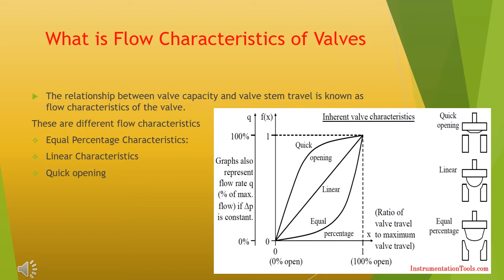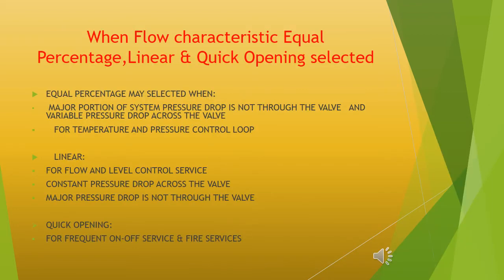Quick opening has too high a valve gain for use in modulating control, so it is limited to on-off service. When selecting flow characteristics — equal percentage, linear, or quick opening: equal percentage may be selected when a major portion of system pressure drop is not through the valve and there is variable pressure drop across the valve, for temperature and pressure control loops. Linear is used for flow and level control service with constant pressure drop across the valve. Quick opening is used for frequent on-off service and fire services.